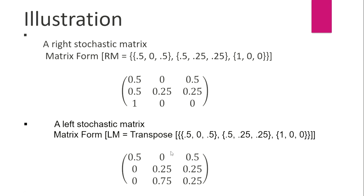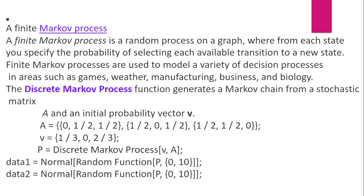A finite Markov process is a random process on a graph where from each state you specify the probability of selecting each available transition to a new state.